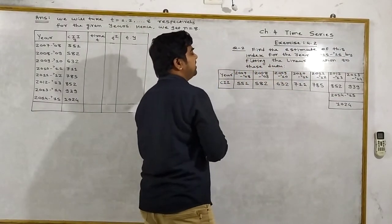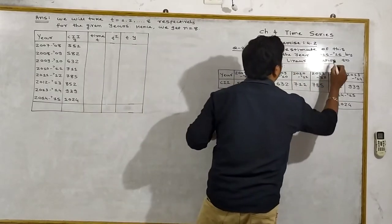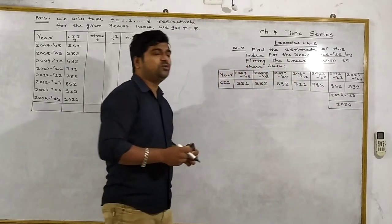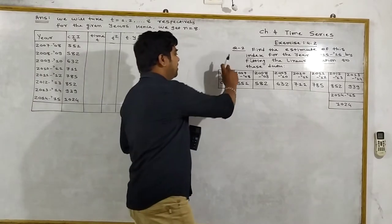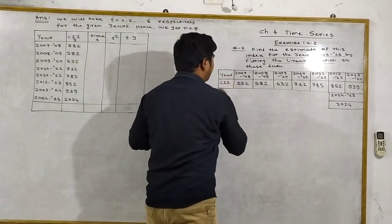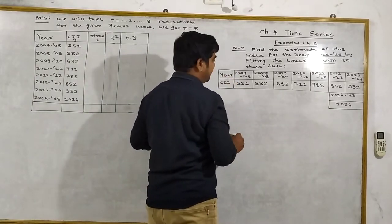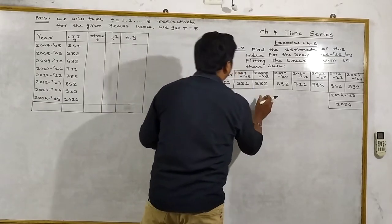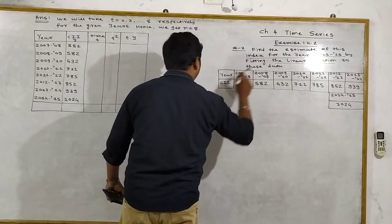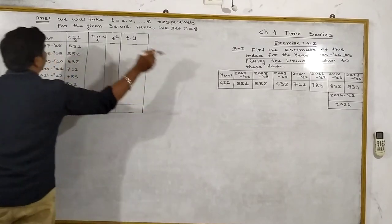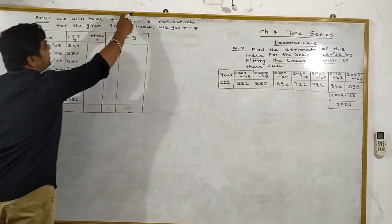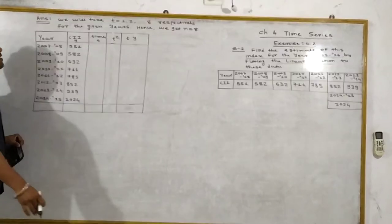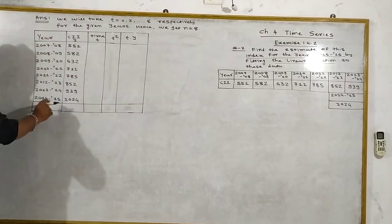2015-16, here we have to estimate the value by fitting a linear equation. This is the second method we have to utilize. Year and CII Cost Inflation Index number value. What do we need to do? We need to take T equal to 1 to 8 respectively for the values. Year and CII.